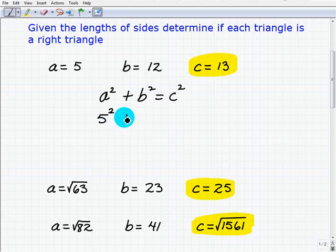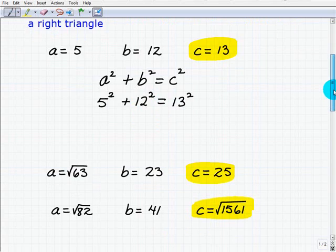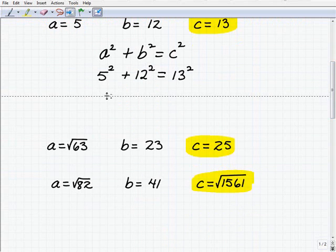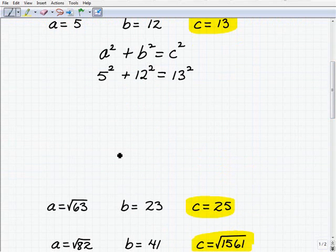I get 5 squared plus 12 squared. And the question is, is that the same as 13 squared? Okay, so hopefully I have a triangle. Why don't you take a moment there to figure that out.